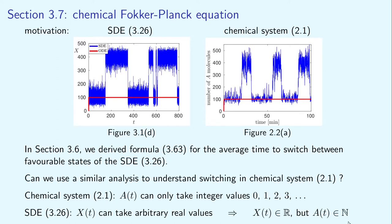If we want to apply our stochastic differential equation theory, we need to extend the values of A to non-integer values. In this lecture, we will present the chemical Fokker-Planck equation, which approximately describes chemical systems. Our main approach is to first approximate the chemical system using a stochastic differential equation. Once we do that, we can apply the theory developed in chapter 3, which we discussed in our previous three lectures.